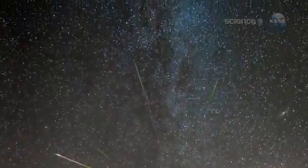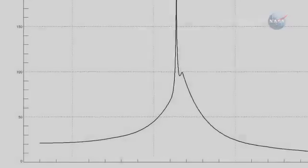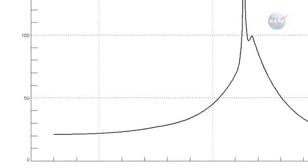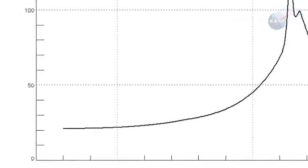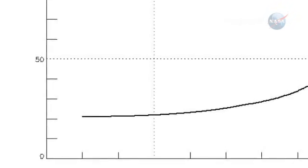Swift-Tuttle's debris zone is so wide, Earth spends weeks inside it. In late July, when our planet first enters the outskirts, Perseid rates are low. A camper peering out the door of their tent for an hour might spy only half a dozen shooting stars.